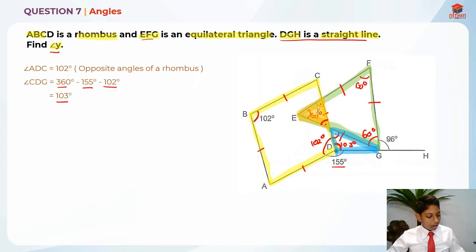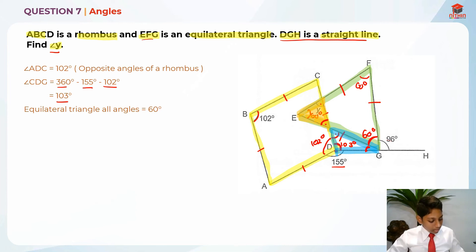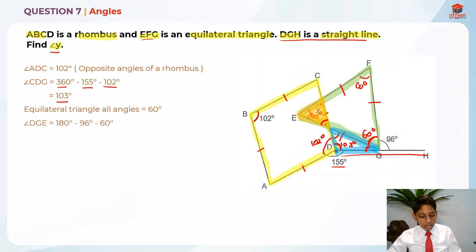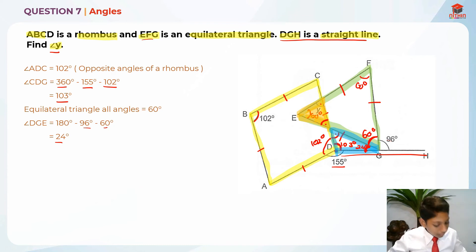Now let's find angle DGE. All angles of an equilateral triangle are 60 degrees, so angle EGF is 60 degrees. Since DGH is a straight line, I take 180 minus 96 minus 60, which gives angle DGE as 24 degrees.